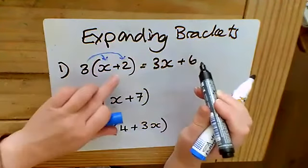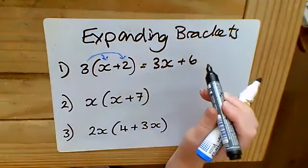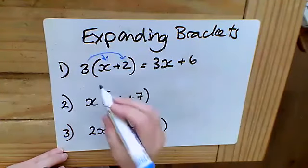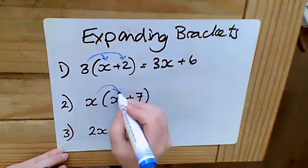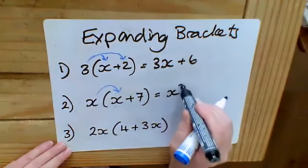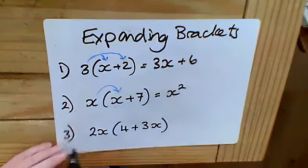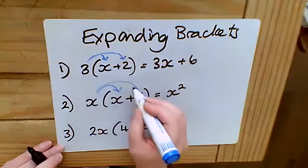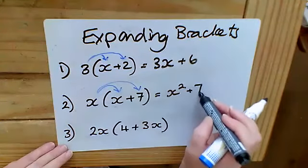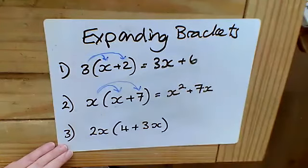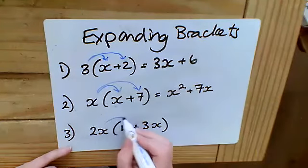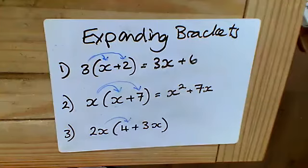Three times two gives me six, so it's plus six — this is a positive three and a positive two. The next example: x times x. We should know using our powers that we can simplify that to x squared, and then x times seven — both positive — gives plus 7x.